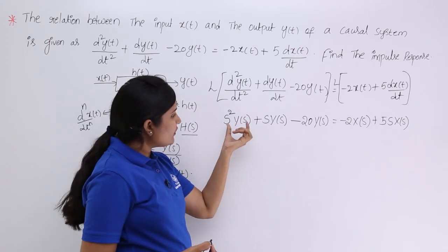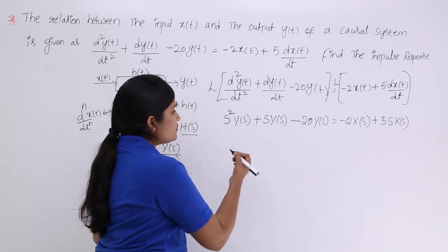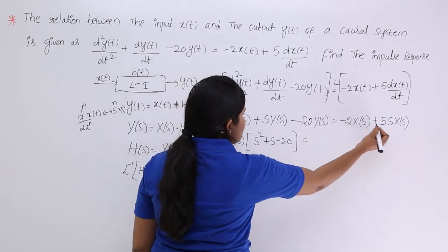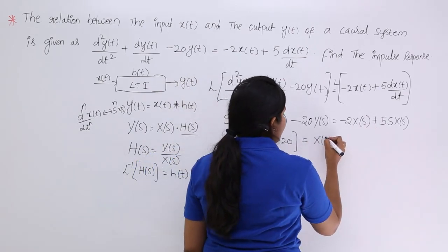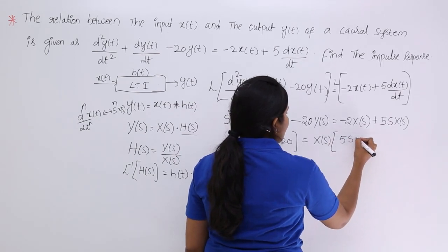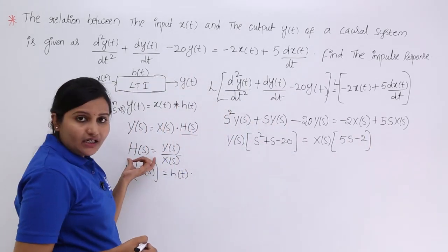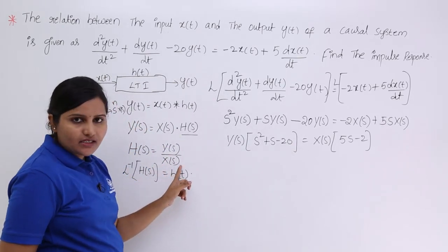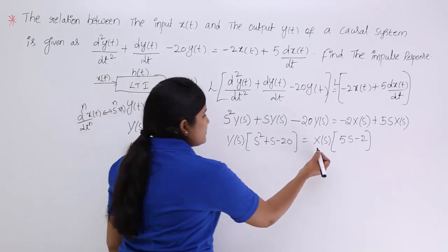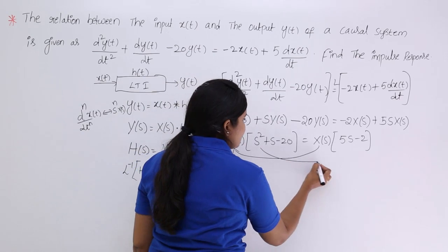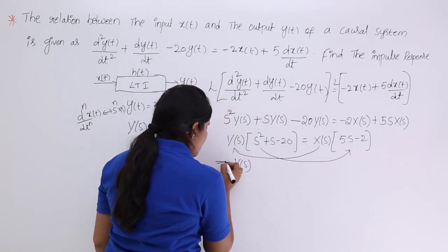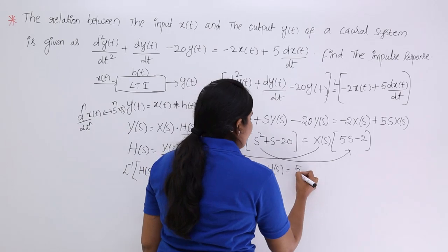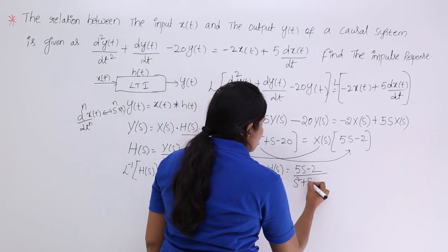On the left-hand side, taking Y(s) as common: Y(s)·(s² + s − 20). On the right-hand side, taking X(s) as common: X(s)·(5s − 2). Sending X(s) to the other side gives H(s) = Y(s)/X(s) = (5s − 2)/(s² + s − 20). Now H(s) is ready.